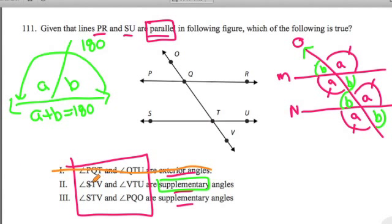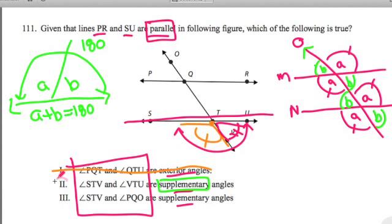What about statement two? Angle STV, so there's T, STV, that's this one right here, and angle VTU, VTU, that's this one here. What can you tell me about these? Well, guess what? They're not the same, they're not congruent, but they're two angles that form a straight line, and we call those supplementary angles. So this one is true,